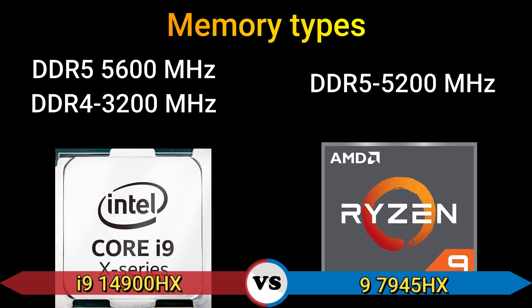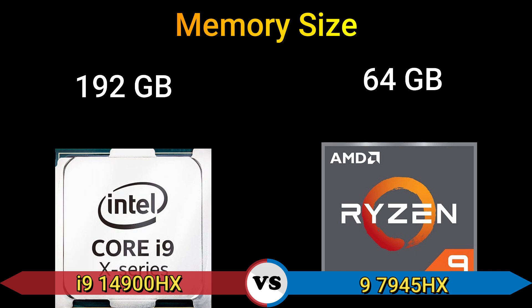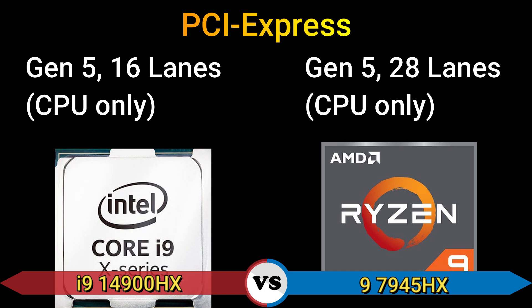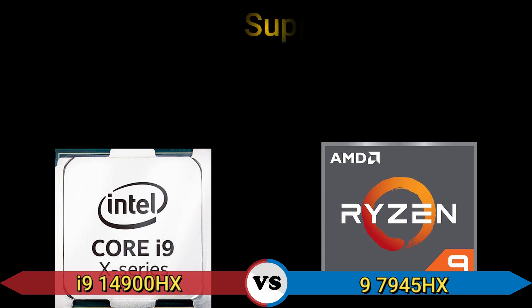Part 4: Memory. Memory types: ZDDR5 5600 MHz, ZDDR4 3200 MHz, and ZDDR5 5200 MHz. Memory size: 192 GB and 64 GB. PCI Express: Gen 5, 16 lanes CPU only, and Gen 5, 28 lanes CPU only. Max memory channels: 2. ECC support: Yes.